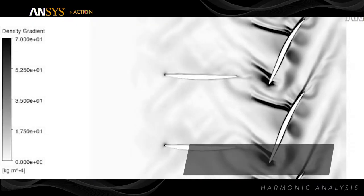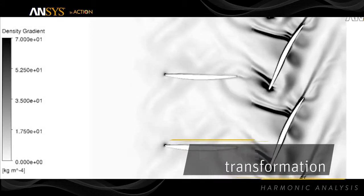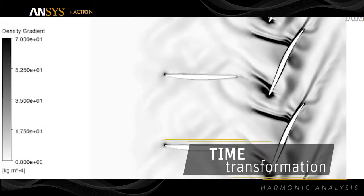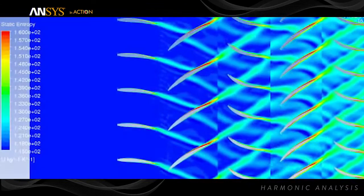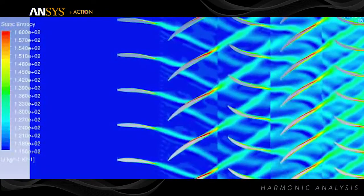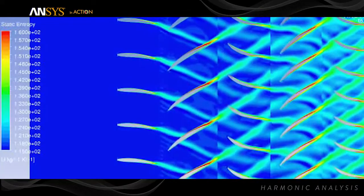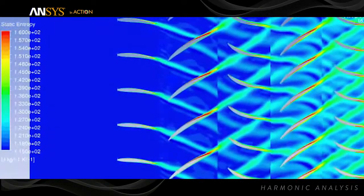A comprehensive set of transient blade row methods are already solving a wide range of turbomachinery flow problems and configurations ranging from axial to radial machines, small pitch to very large pitch variations, single-row frozen gust to multi-stage simulations.